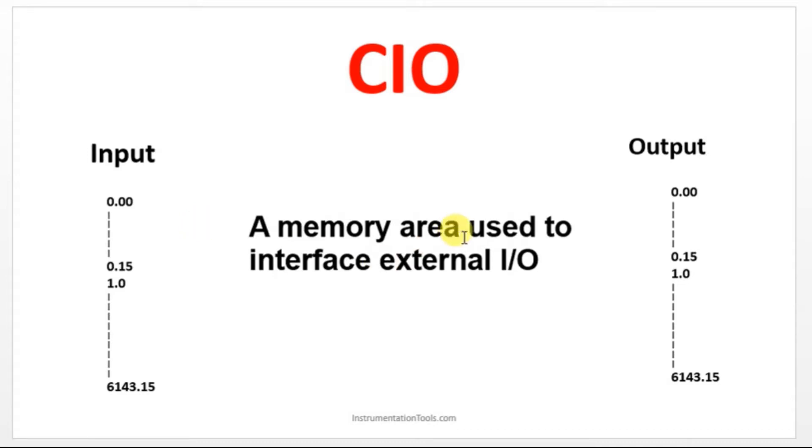Let us see about output. For output addressing we will be using 100 series: 100.0, 100.7, 101.0, like that we will be using for output addressing. In the integrated type PLC, you can use 0.00 and 100.00 for I/O input and output.